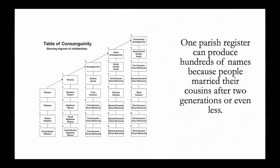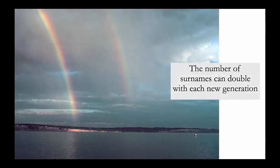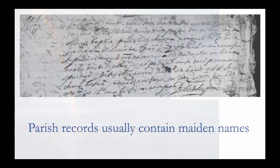One parish register can produce hundreds of names because sometimes people married their cousins after two generations or even less. The number of surnames can double with each new generation. Parish records usually contain women's maiden names, as Spanish women retained their maiden names after marriage.